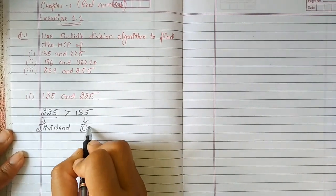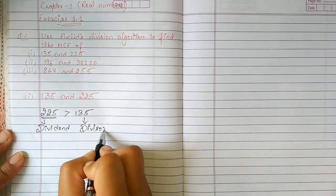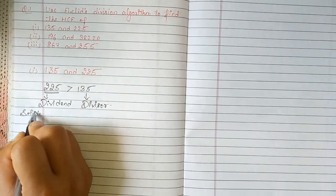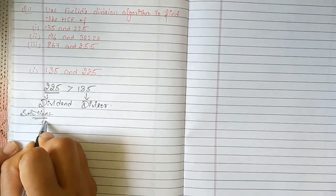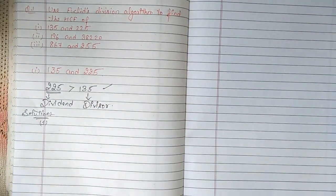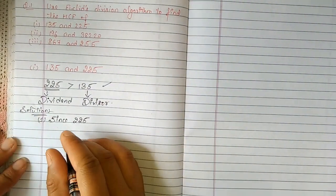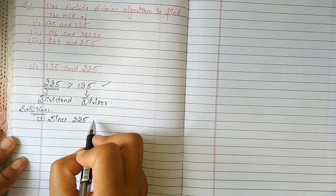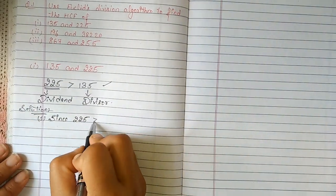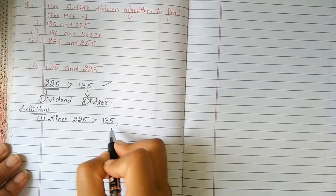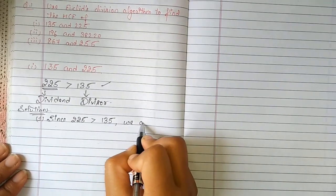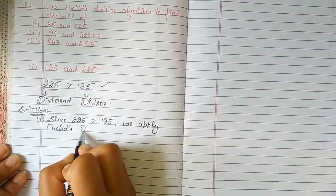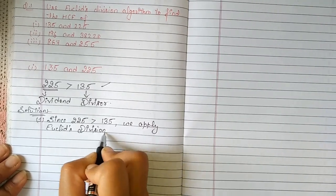This is our division. We will start with the solution. Since 225 is greater than 135, then we apply Euclid's Division Lemma.